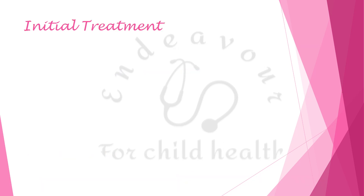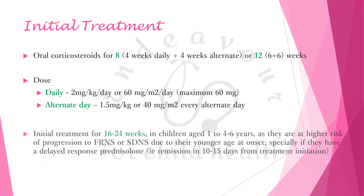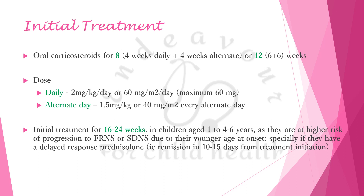For initial treatment, oral corticosteroids are given for 8 weeks (4 weeks daily and 4 weeks alternate) or 12 weeks (6 plus 6). The daily dose is 2 mg/kg/day or 60 mg/m² /day, maximum 60 mg. The alternate day dose is 1.5 mg/kg or 40 mg/m² every alternate day. Initial treatment for 16 to 24 weeks is recommended in children aged 1 to 4–6 years, as they are at higher risk of progression to frequently relapsing or steroid-dependent nephrotic syndrome due to younger age at onset.